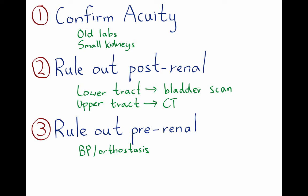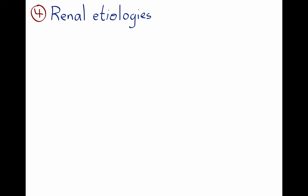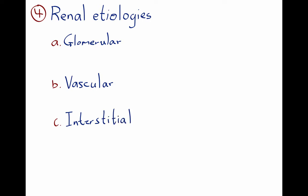Once we have ruled out pre- and post-renal etiologies, we focus on the kidney itself. The kidney is composed of four compartments: the glomerulus, the vessels, the interstitium, and the tubular compartment. Going in order, we first look at the glomerular compartment, where the urinalysis tells us if glomerulonephritis is causing acute kidney failure.